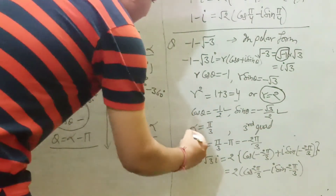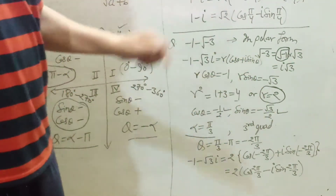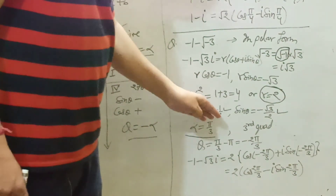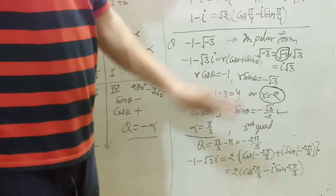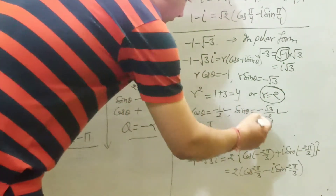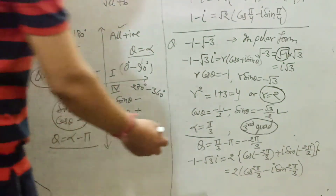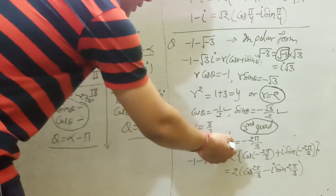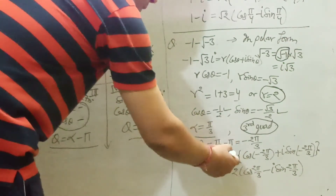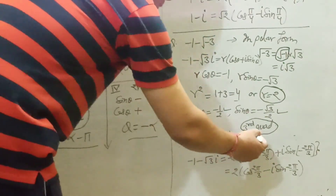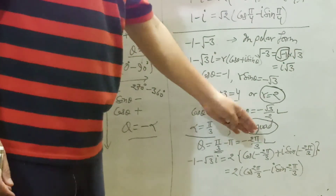Find alpha from the table ignoring the minus signs. From the table, sin of root 3 upon 2 is sin 60 degrees equals pi by 3. So alpha equals pi by 3. Now both sin and cos are negative, which means the third quadrant. In the third quadrant, theta equals alpha minus pi. So theta equals pi by 3 minus pi. Taking LCM 3: this gives pi minus 3 pi over 3 equals minus 2 pi by 3. So theta equals minus 2 pi by 3.